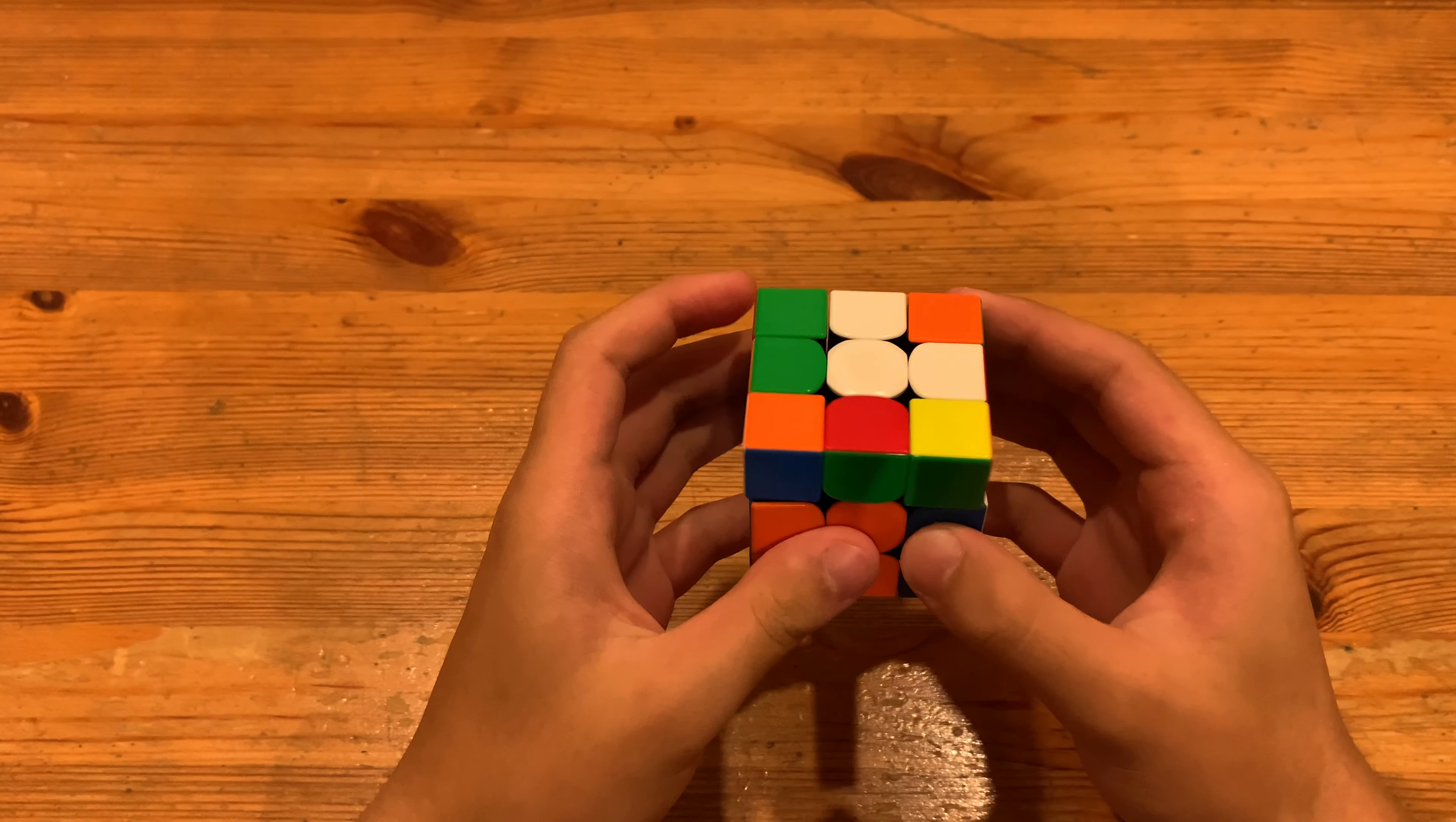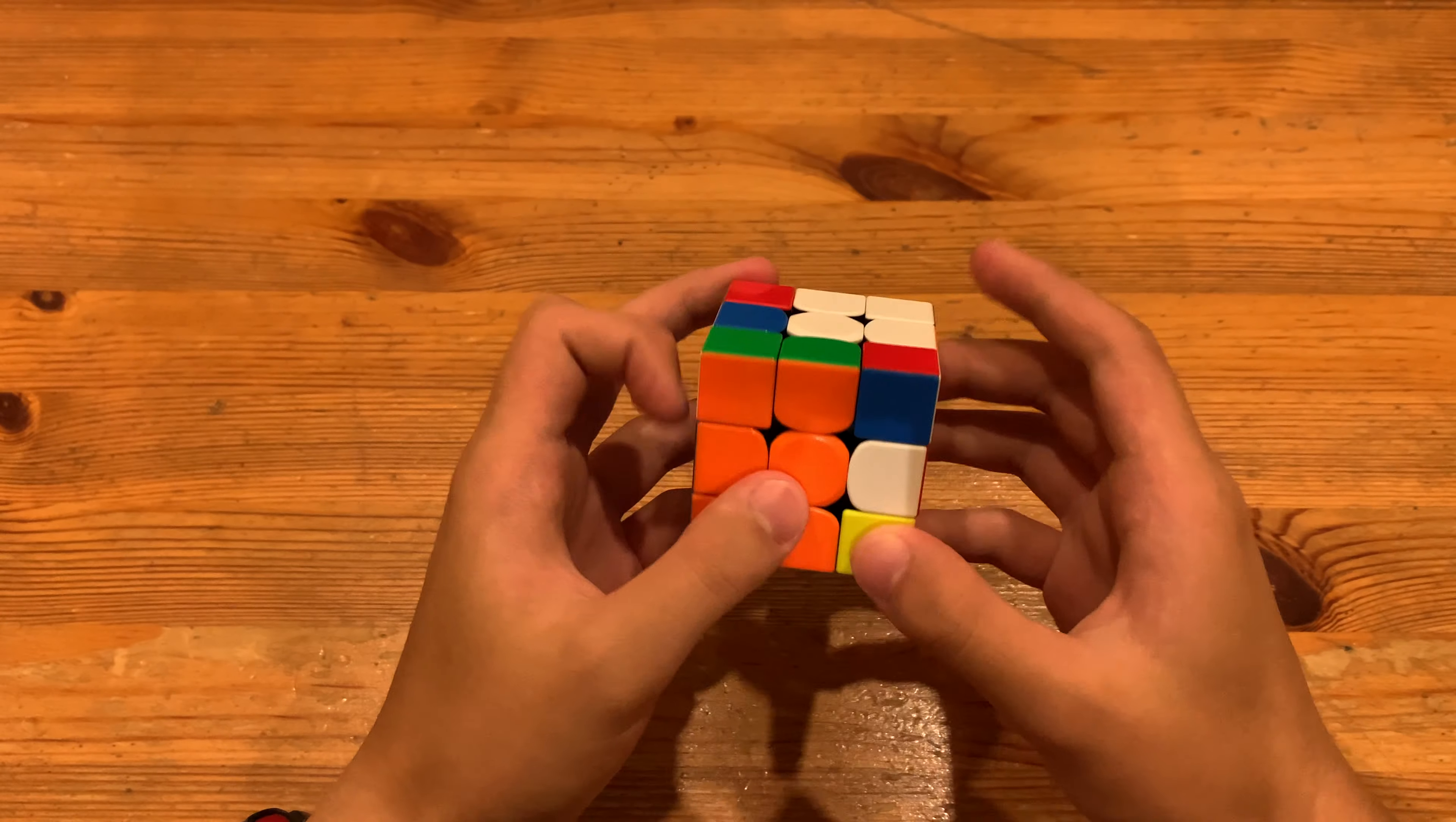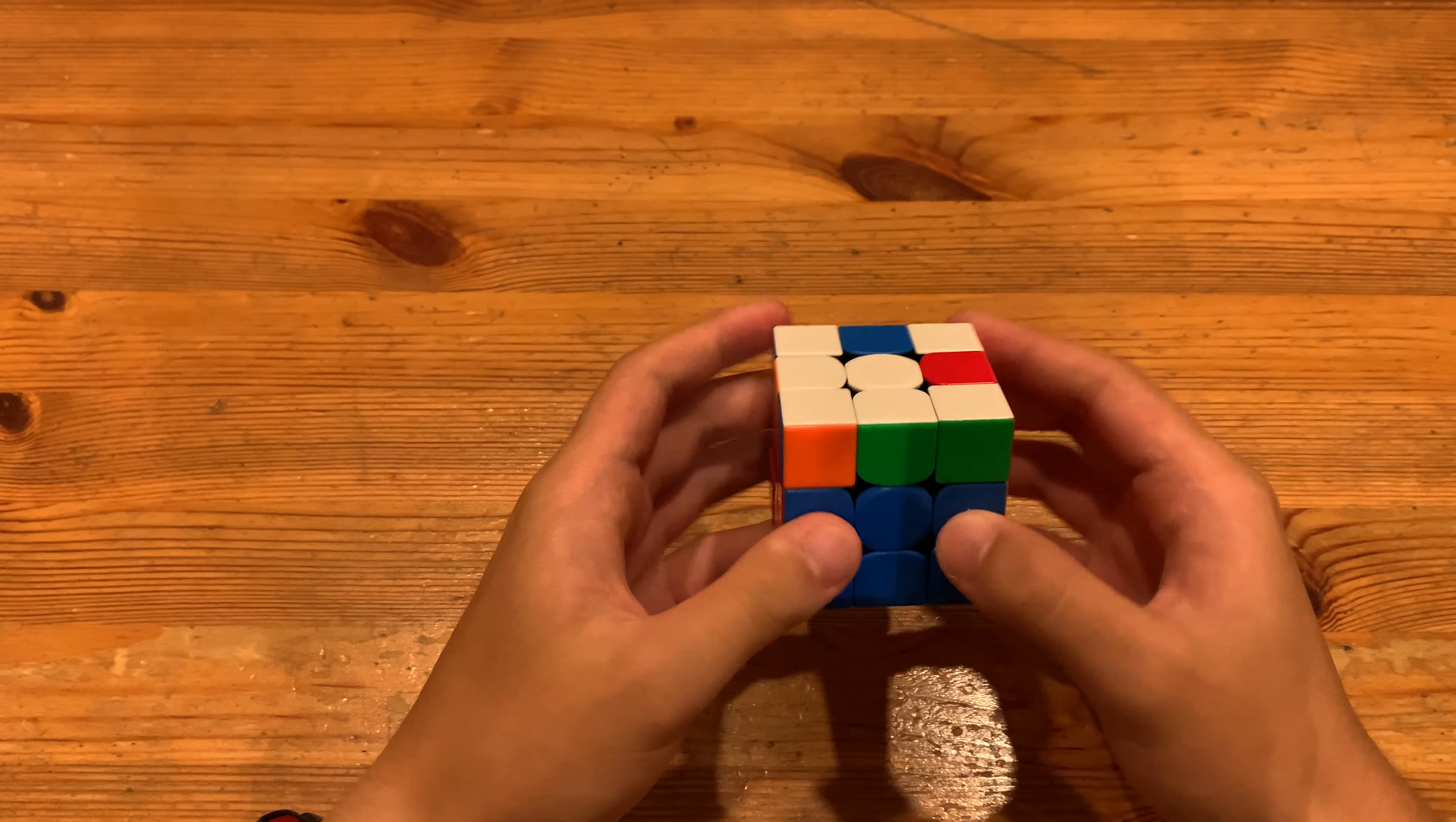And that left him with this F2L pair over here, paired up and an insert, slight lockup, and the next, this pair. He could have just done double sledge instead, or maybe sledge and an insert. There's a couple of ways to do it, but he did a rotation into double back sexy, which is good.